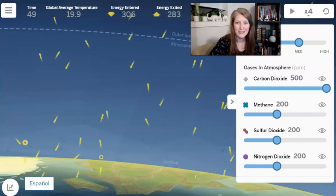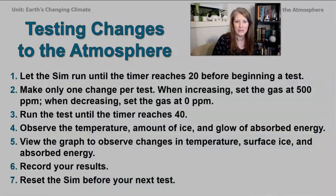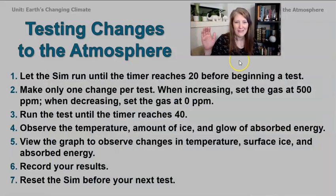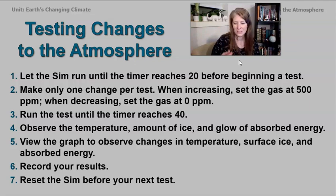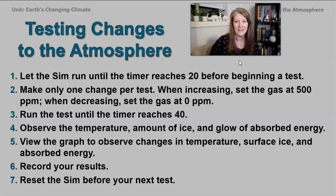Now it's your turn to go explore the sim. You're going to run eight tests — one for each of the four gases where you increase the parts per million to 500, and then another set of tests where you decrease it down to zero parts per million. Record each one — you can just write down some notes in a notebook or something like that. Then come back to this video and we'll take a look at some of our data together.